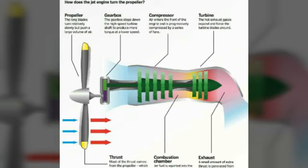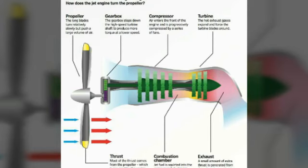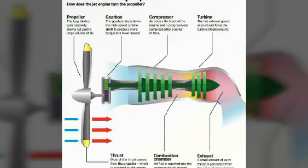Propeller blades have aerodynamic limitations — at higher velocities or higher altitudes they are less efficient than at lower altitude and lower air velocity. So if turbine RPM is too high it can damage the propeller blades. The reduction gearbox placed between the turbine shaft and the propeller controls the propeller RPM, improving propeller efficiency. This is why the turboprop achieves the highest propulsive efficiency compared to turbofan and turbojet engines.